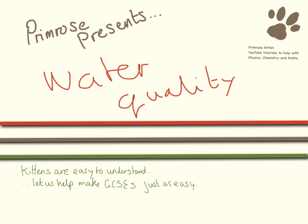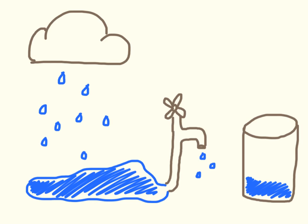Hello and welcome to this video where we're going to be looking at water quality and water treatments. The majority of water that we get through our taps is actually rainwater. It falls out of the sky, goes into reservoirs, but quite a lot happens to it before it actually comes out of our taps and is suitable for drinking.